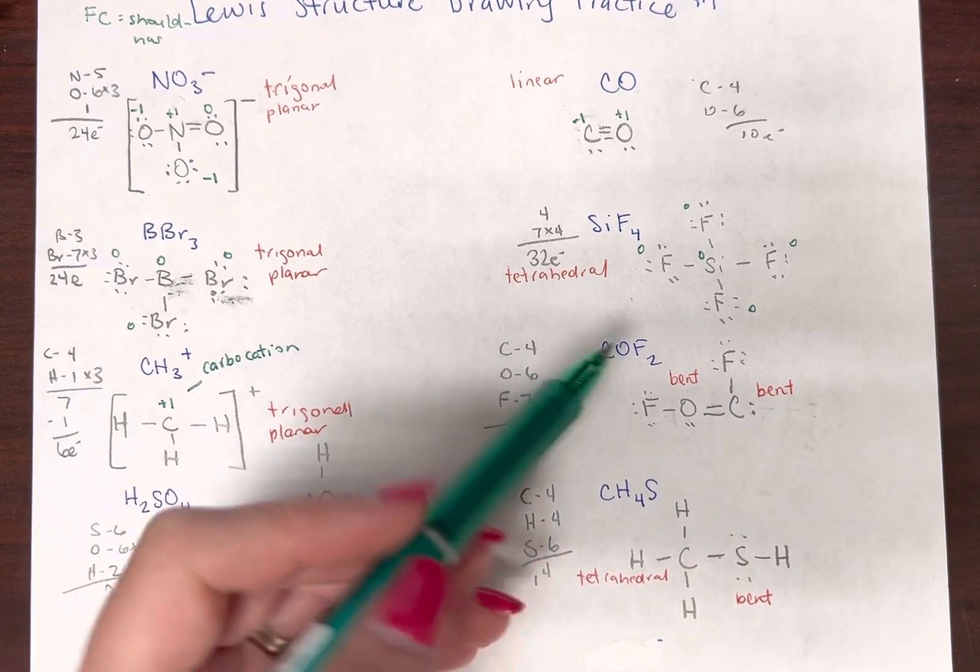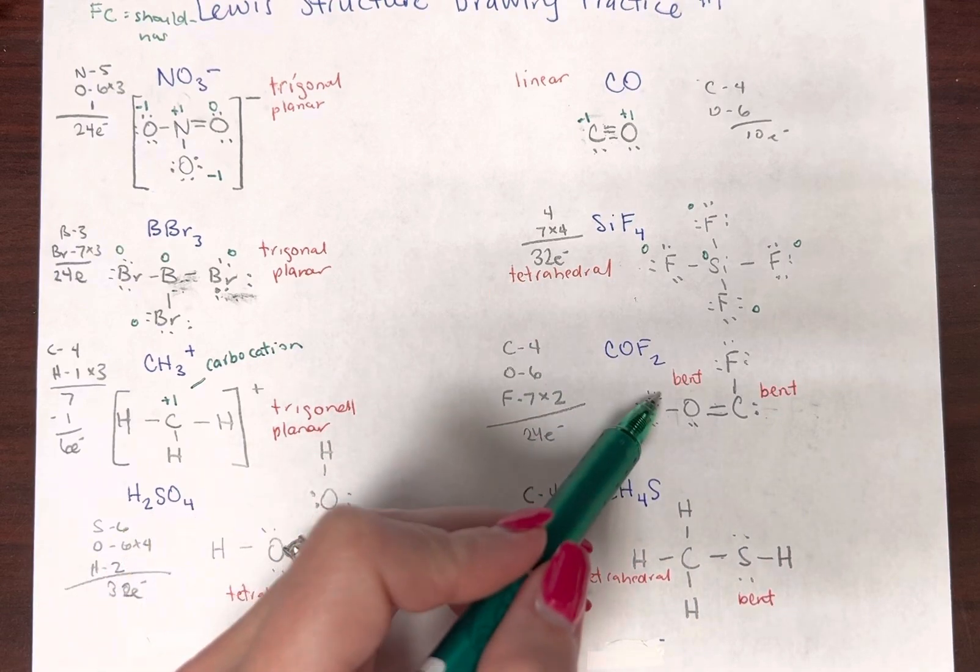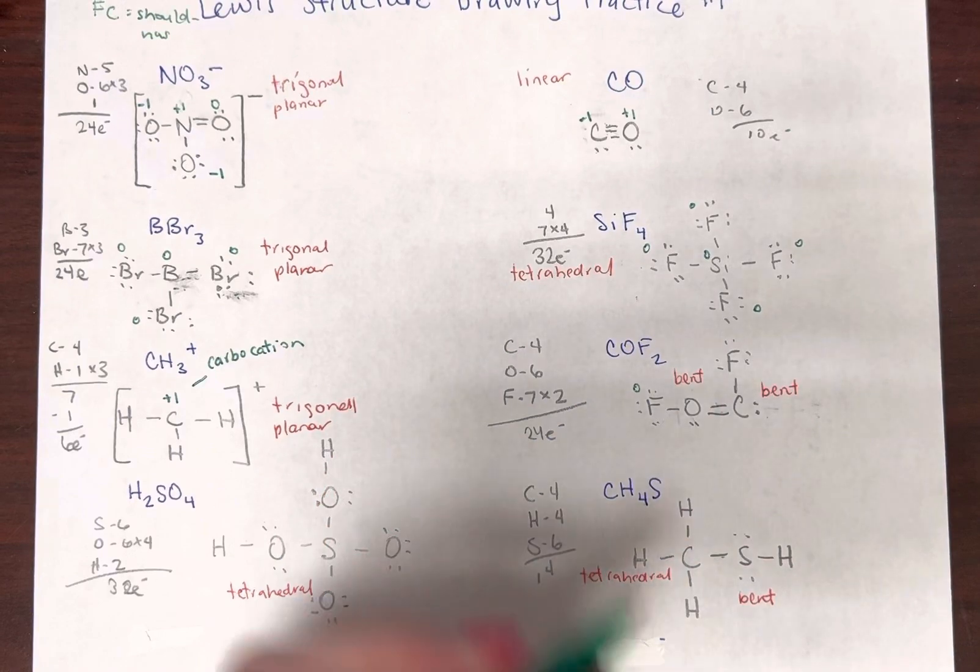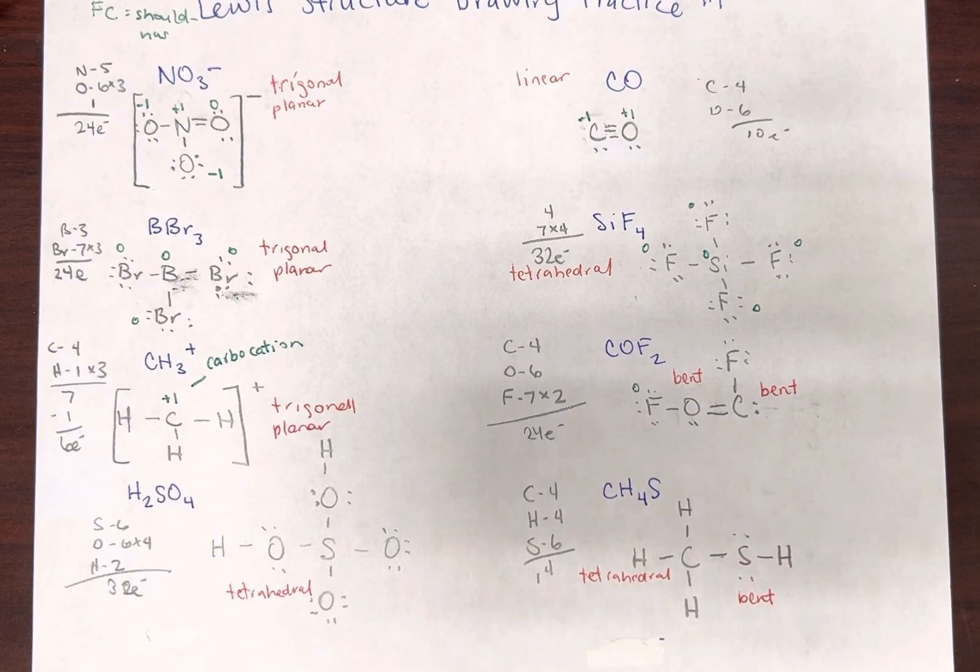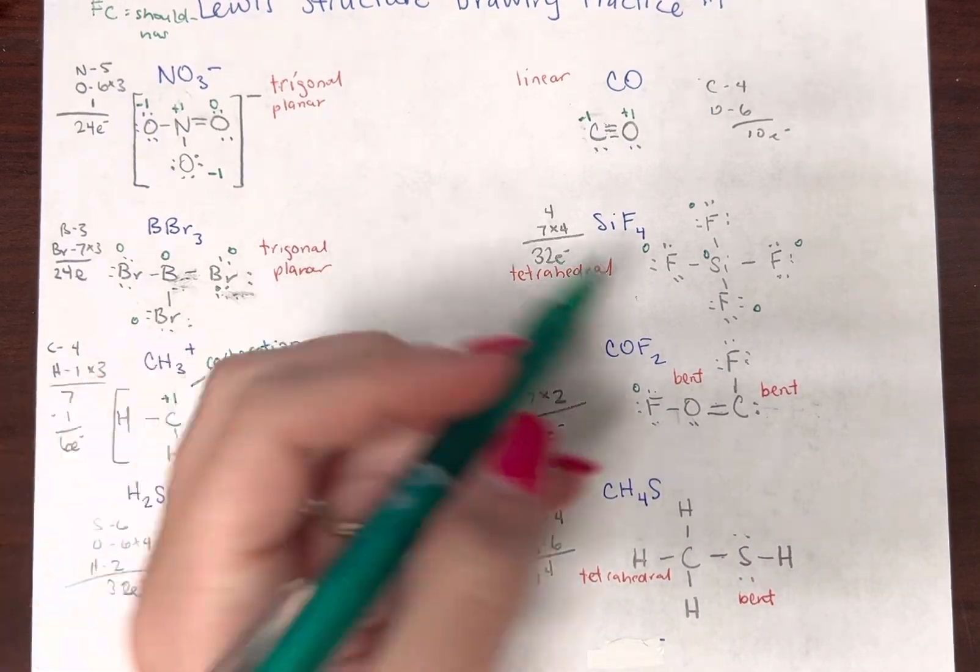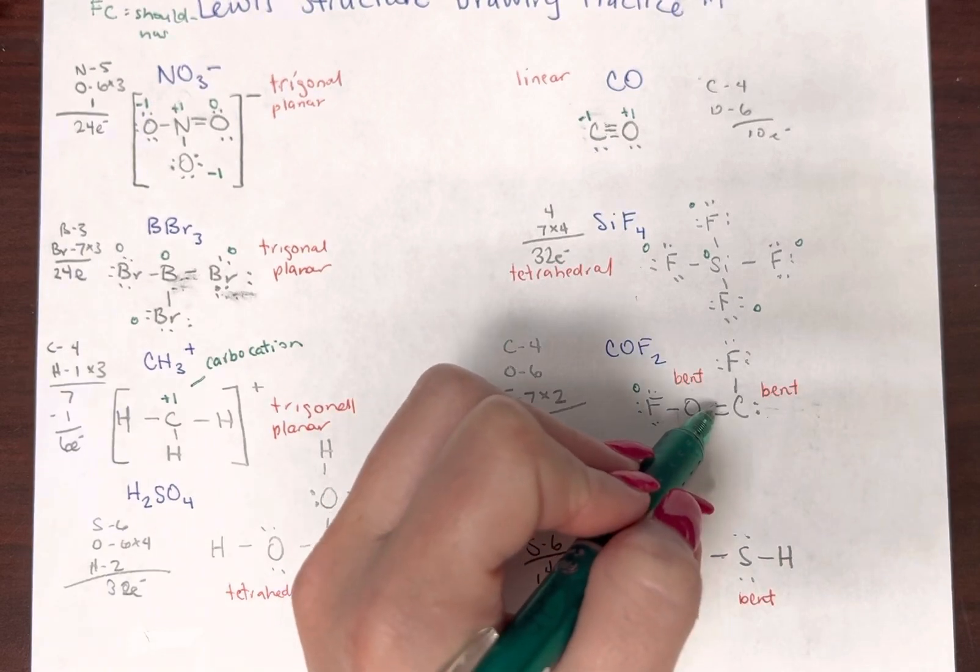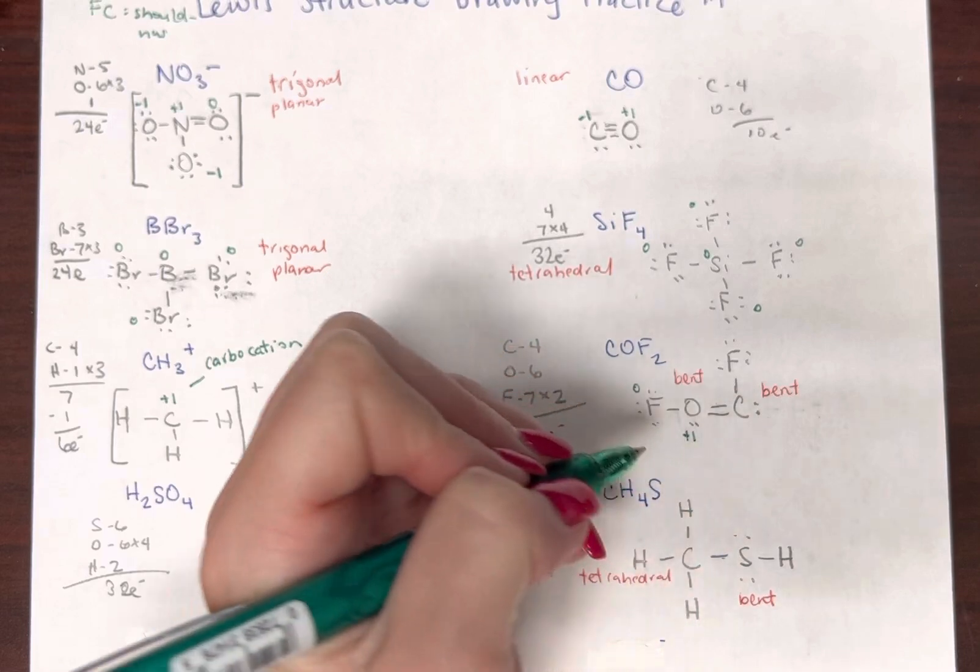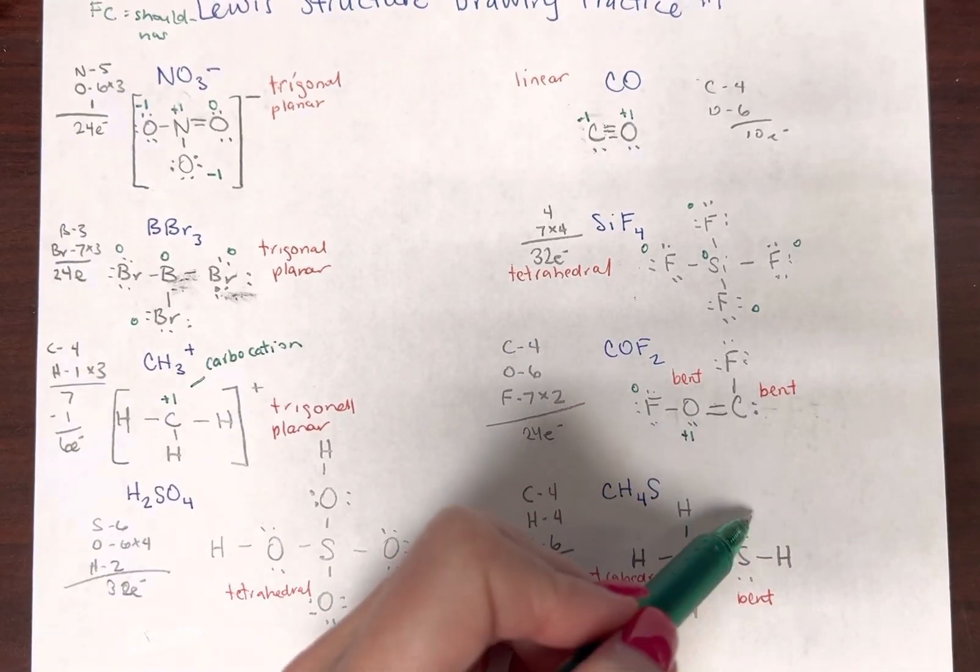Okay, now let's look at this structure. Let's start with fluorine. Brings in seven. One, two, three, four, five, six, seven. Seven minus seven is zero. Oxygen brings in six. It has one, two, three, four, five. Oh, that's a plus one. That's not good. Kind of makes you cringe a little bit.